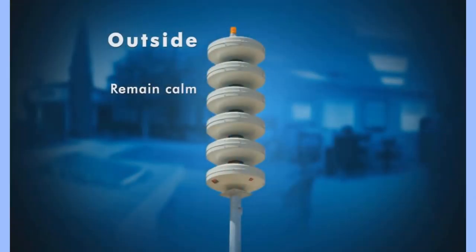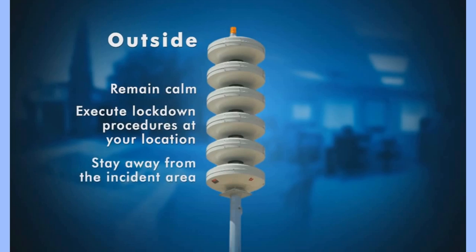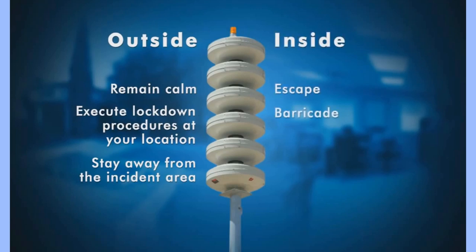Knowing where you are in relation to the shooter could very well save your life. If you're outside the immediate incident area when lockdown is declared via the installation's warning and notification systems, remain calm and quickly determine the most reasonable way to protect your life. Initiate facility lockdown procedures and do not allow individuals to enter or exit the area during lockdown until the all-clear is announced. If you're inside the immediate incident area, decide if you should escape, barricade, or fight.